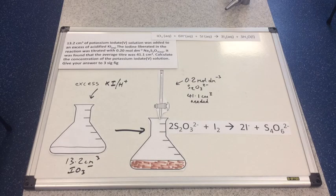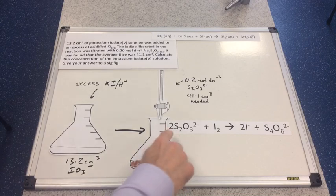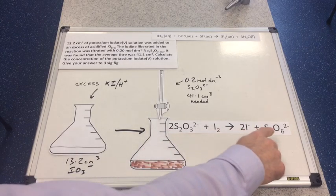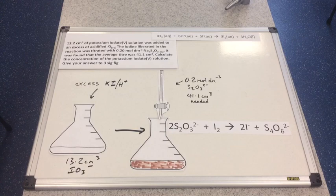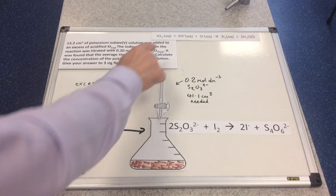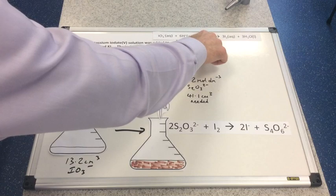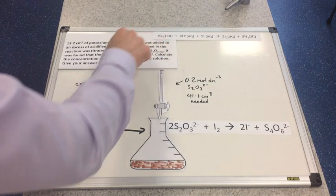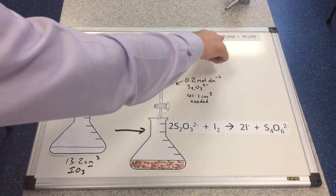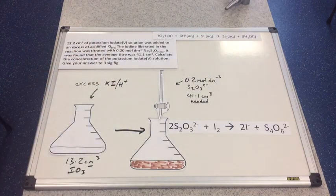I've put the two equations involved in this experiment on the board in case any of you would like to have a go at the calculation yourselves before I go through the answers. The titration equation is the familiar one; the new equation has the iodate(V) ion oxidizing iodide ions to iodine. Pause the video if you want to try the calculation first.